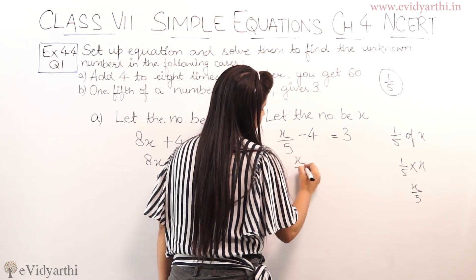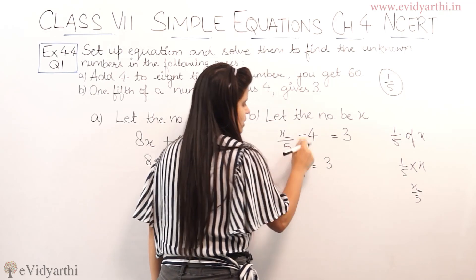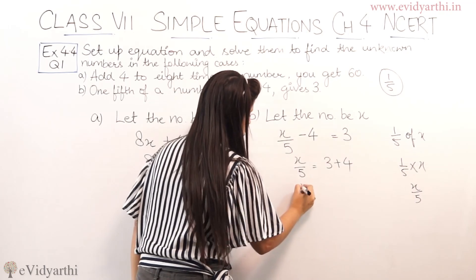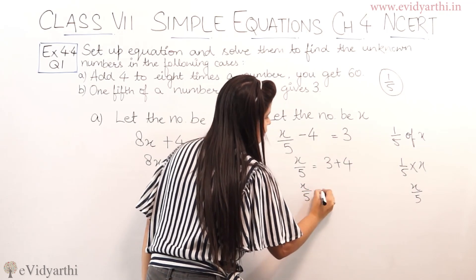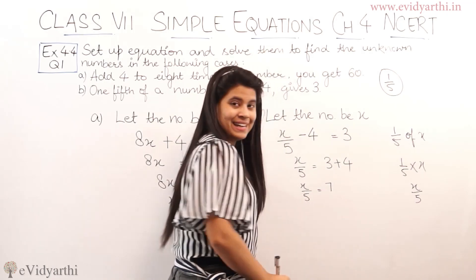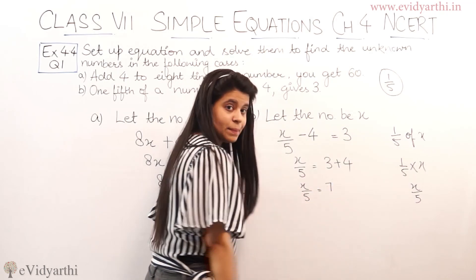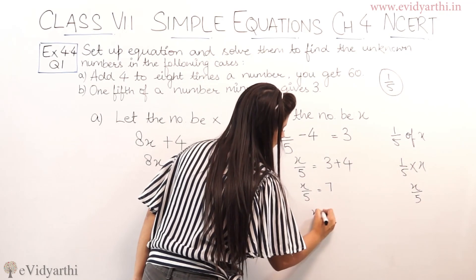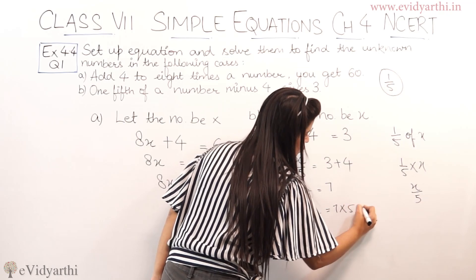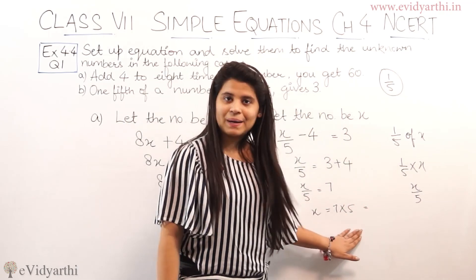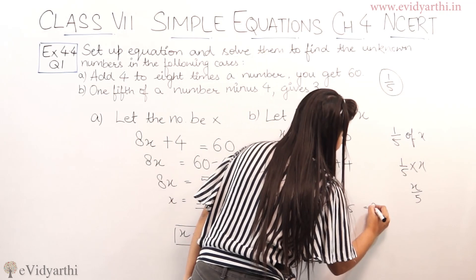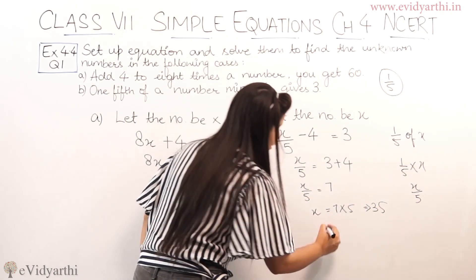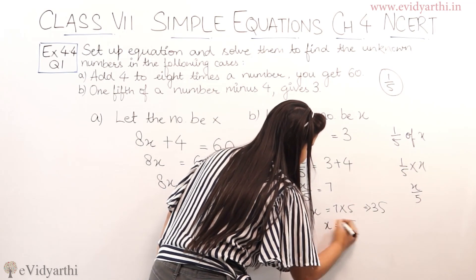Now to solve this: x/5 stays as is, we send minus 4 to the other side, it becomes plus 4. So x/5 = 4 + 3 = 7. Then we send the 5 to the other side: since it was dividing, it becomes multiplication. So x = 7 × 5 = 35. The value of x is 35.